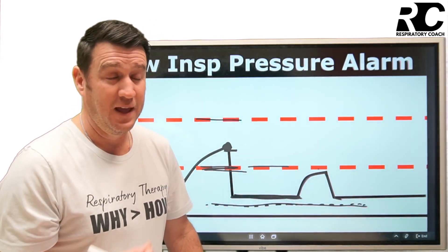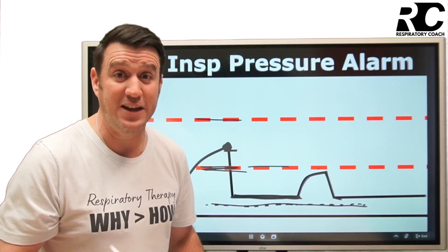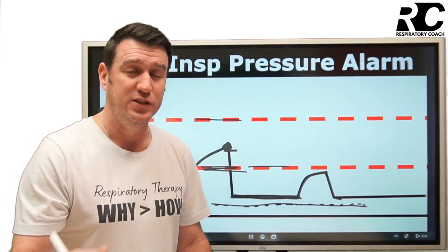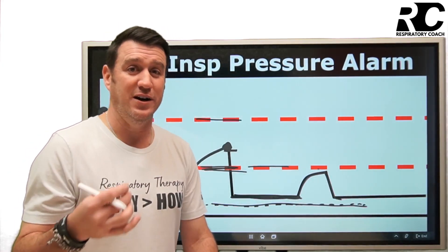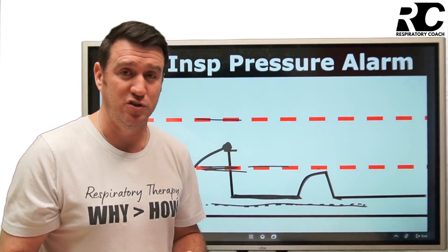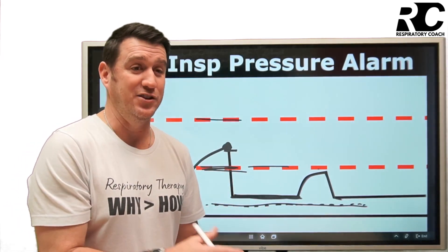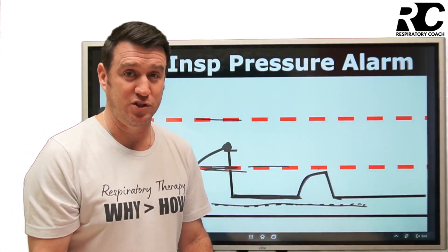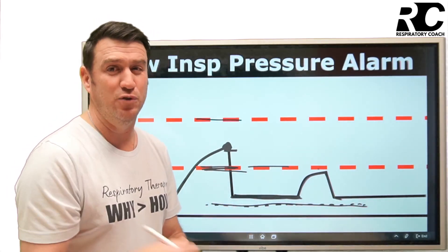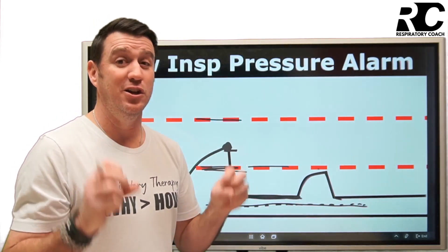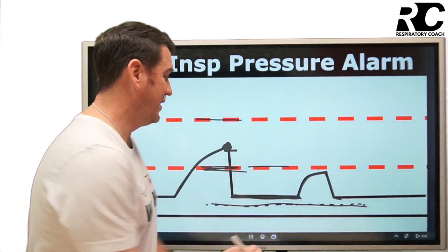Also keep in mind that a patient with a chest tube could potentially create a large leak. If you have a large pneumothorax with a chest tube inserted and you're getting a low pressure alarm, it may be related to that leak. So use the term 'leak' loosely when you're trying to identify the source.